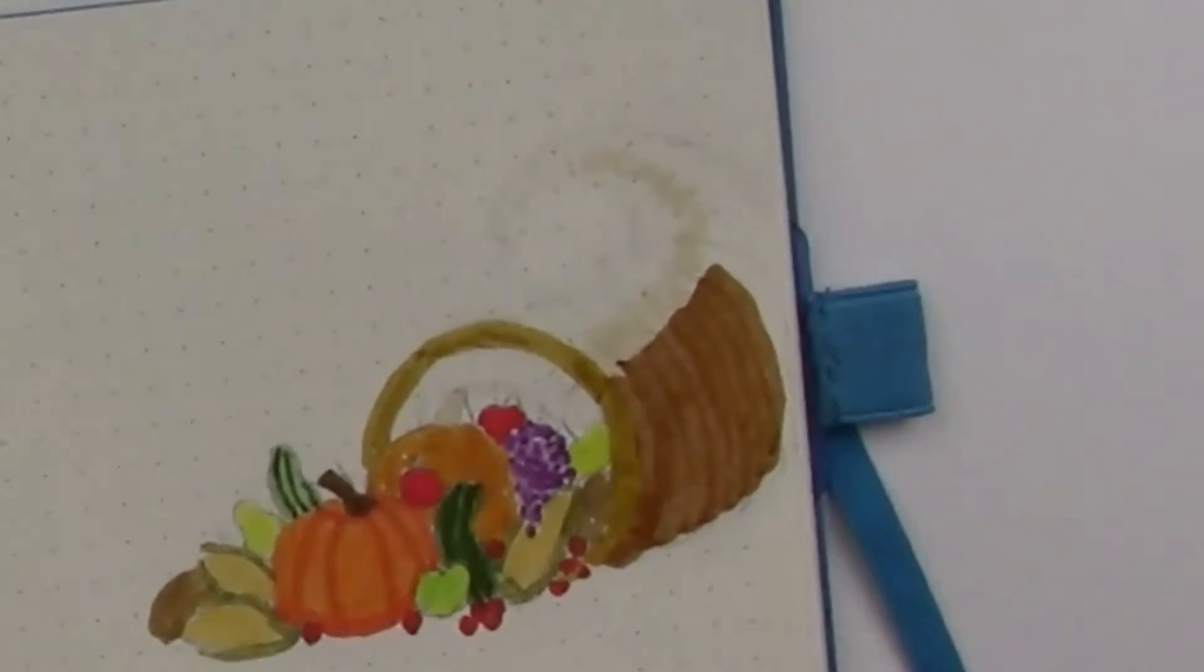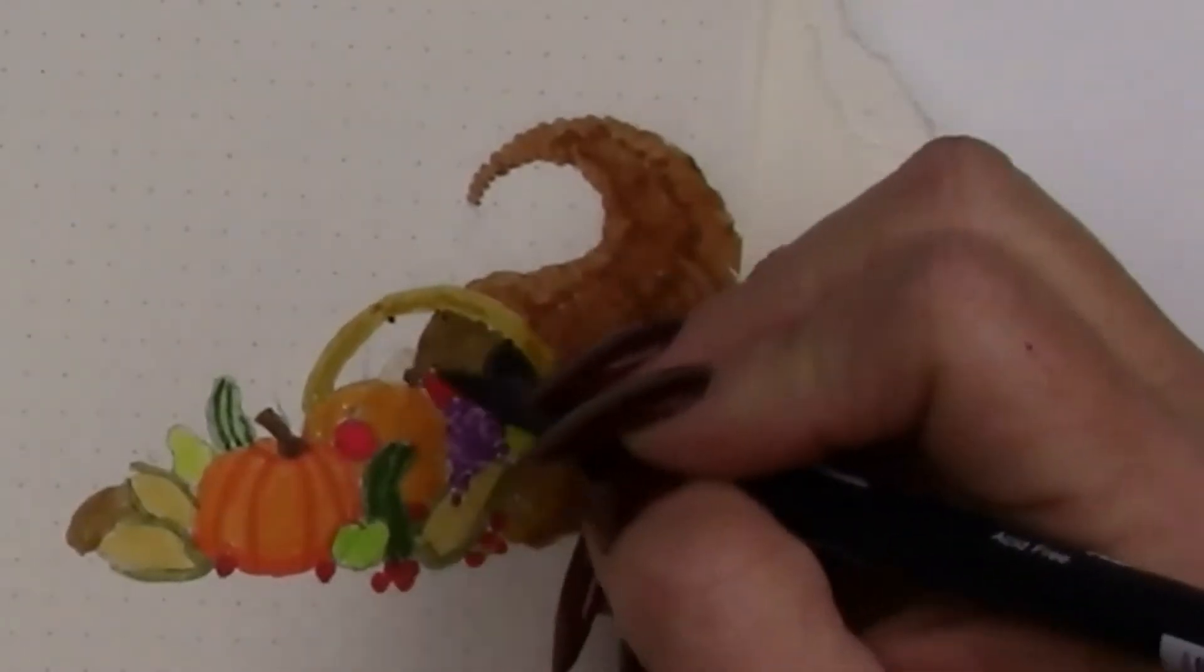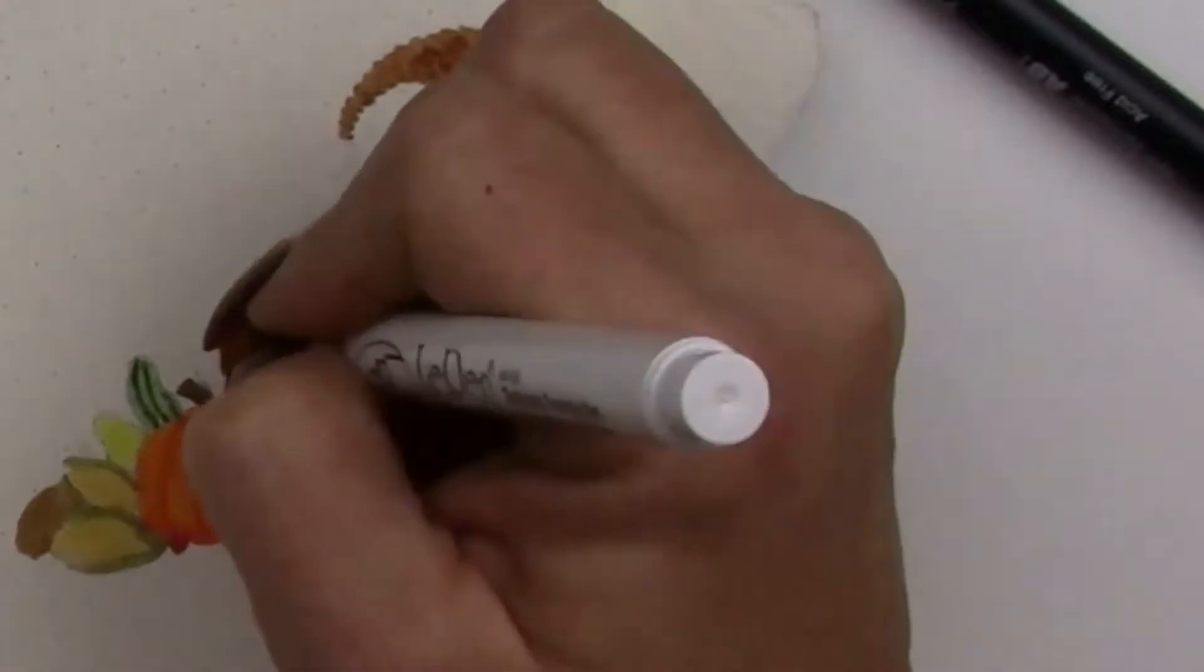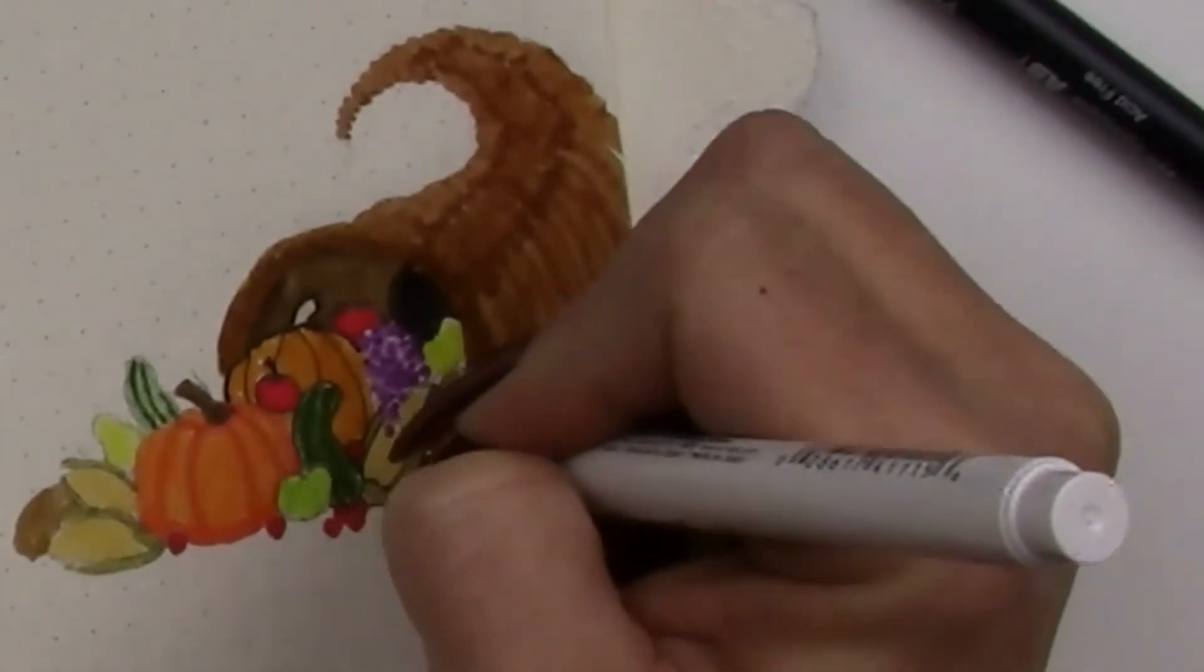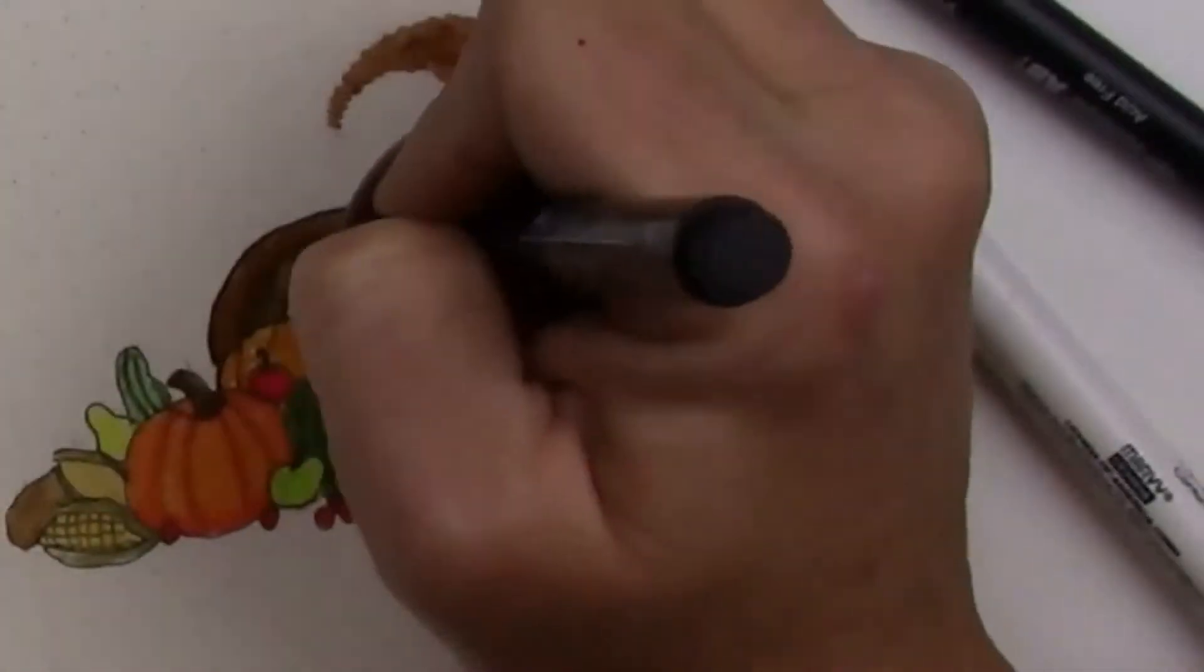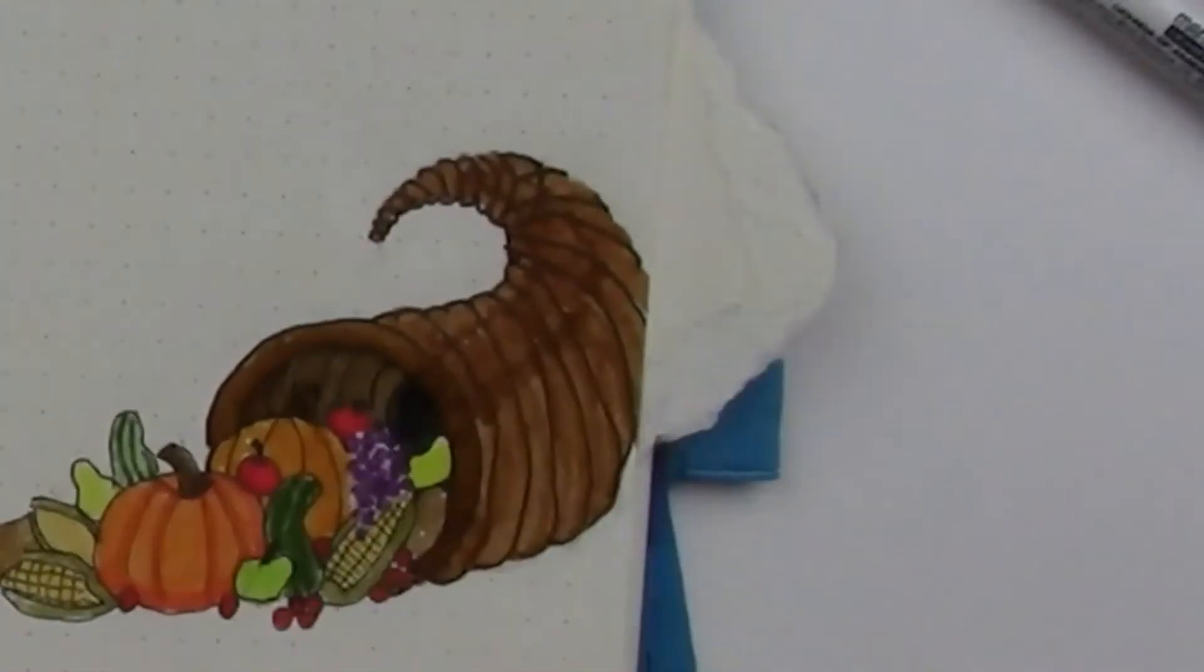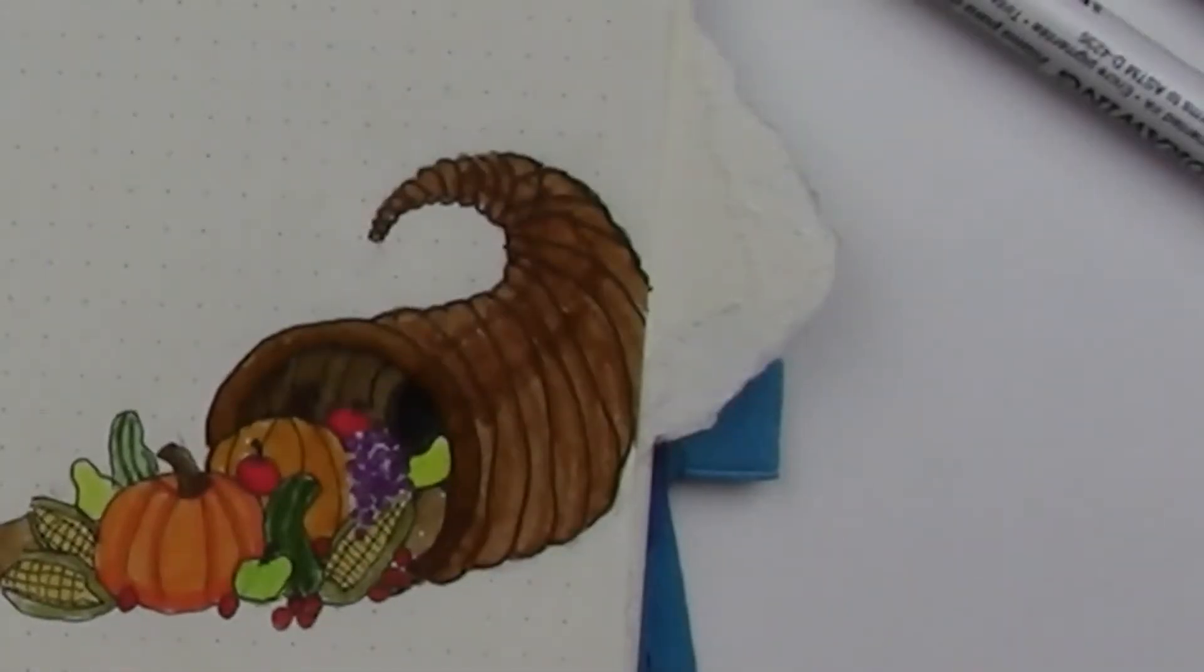Now I started to outline this with the Faber Castell medium point and realized it was way too thick. I was going to be losing a lot of the detail on the smaller fruits and vegetables. So, I did switch over to Le Pen 0.05, which was a much better choice. It's not necessarily a small image, but there are a lot of small details.